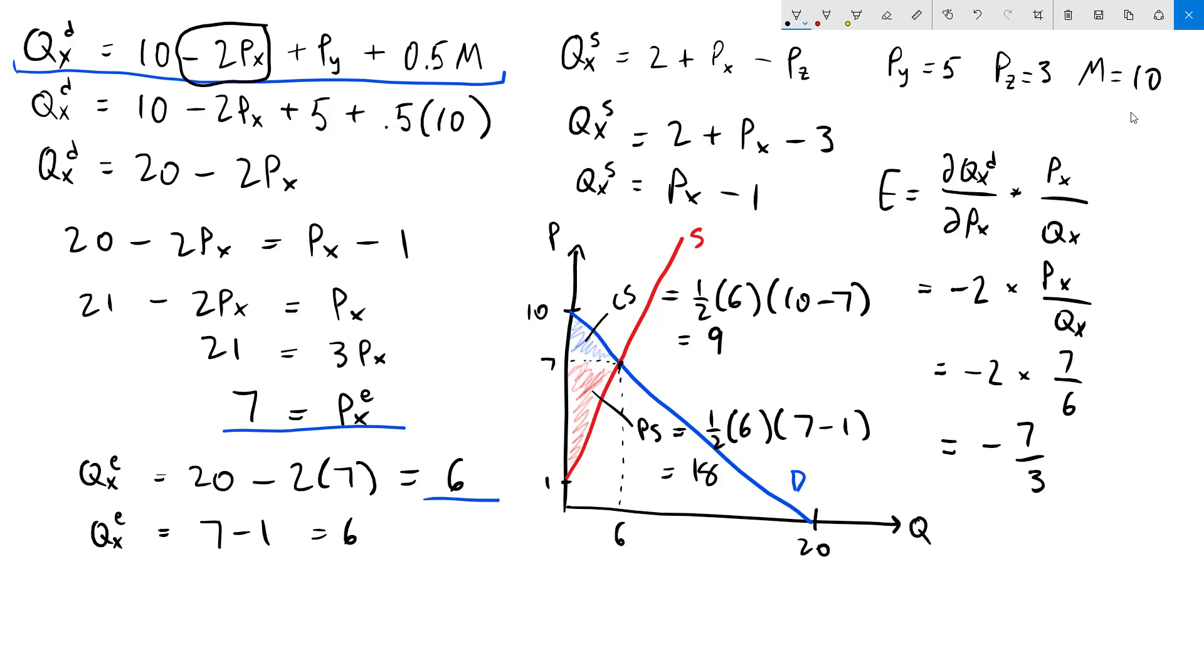Since the absolute value of negative 7 thirds is bigger than 1, then we can conclude that our demand curve is elastic at the equilibrium. And this problem is now complete. We have solved for equilibrium, calculated consumer and producer surplus, and then elasticity. If you have any questions, please let me know. Thanks for watching.